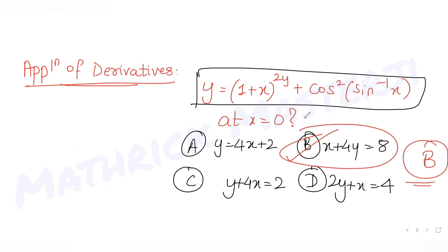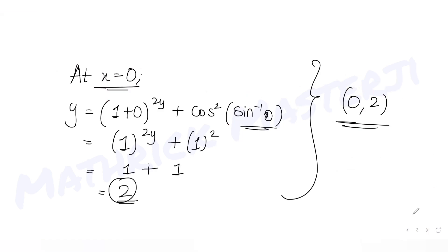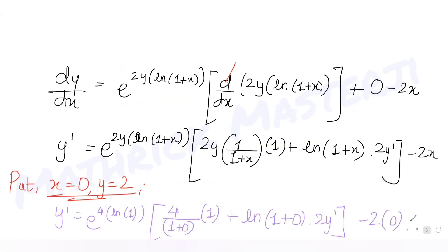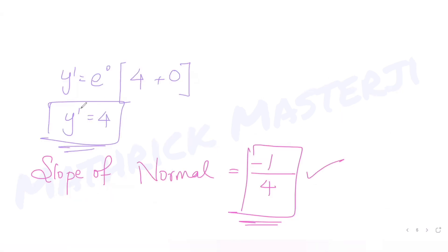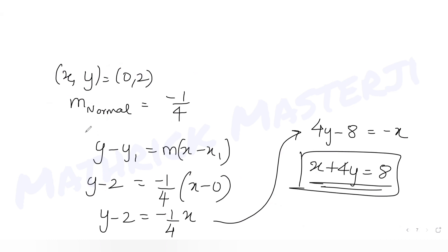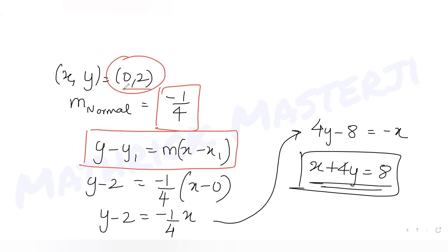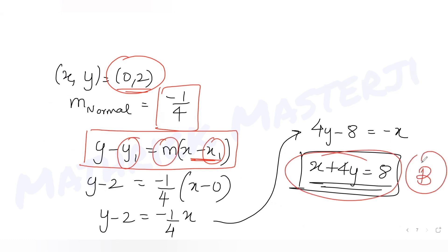The equation of the normal to the curve at x = 0, where y = 2, matches option B: x + 4y = 8. To summarize the method: first we had the curve's equation; we found the slope by differentiating with respect to x to get the tangent slope; then we used perpendicular slopes (negative reciprocals) to get the normal slope; finally, we used y - y₁ = m(x - x₁) with the point and slope to get the equation.